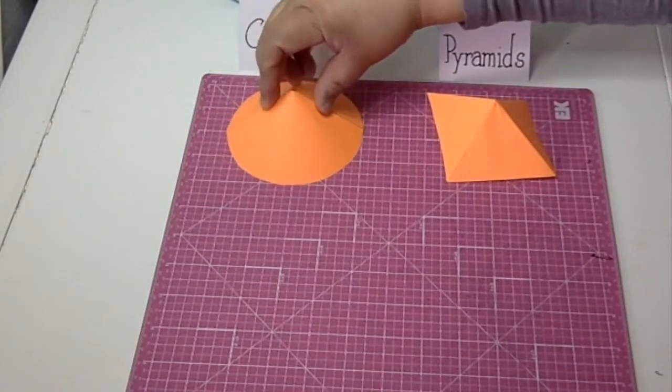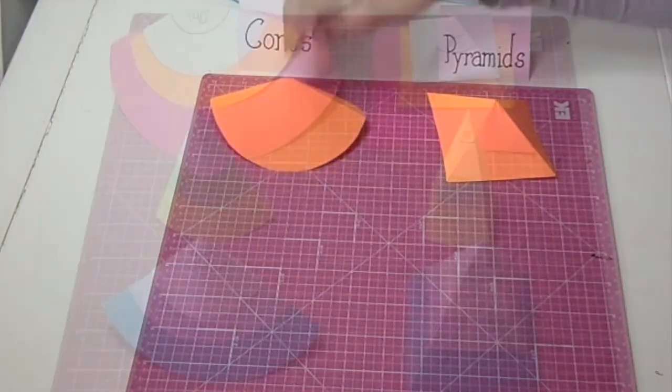That's how you make different size cones and pyramids. Check out my channel, Square Type. Thanks for watching. Bye!